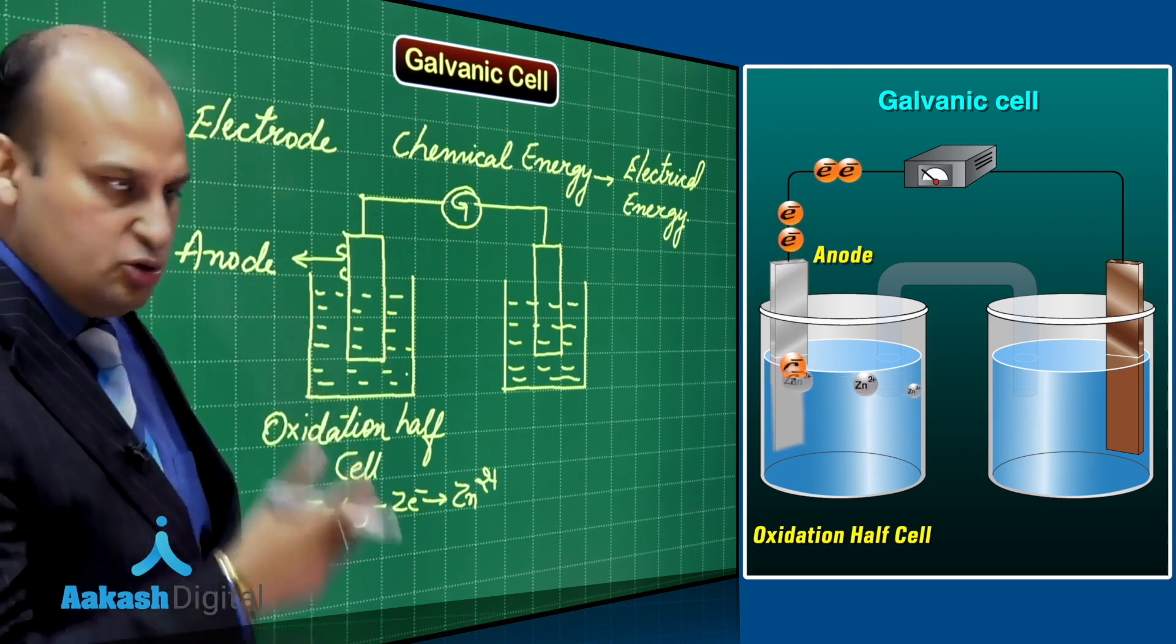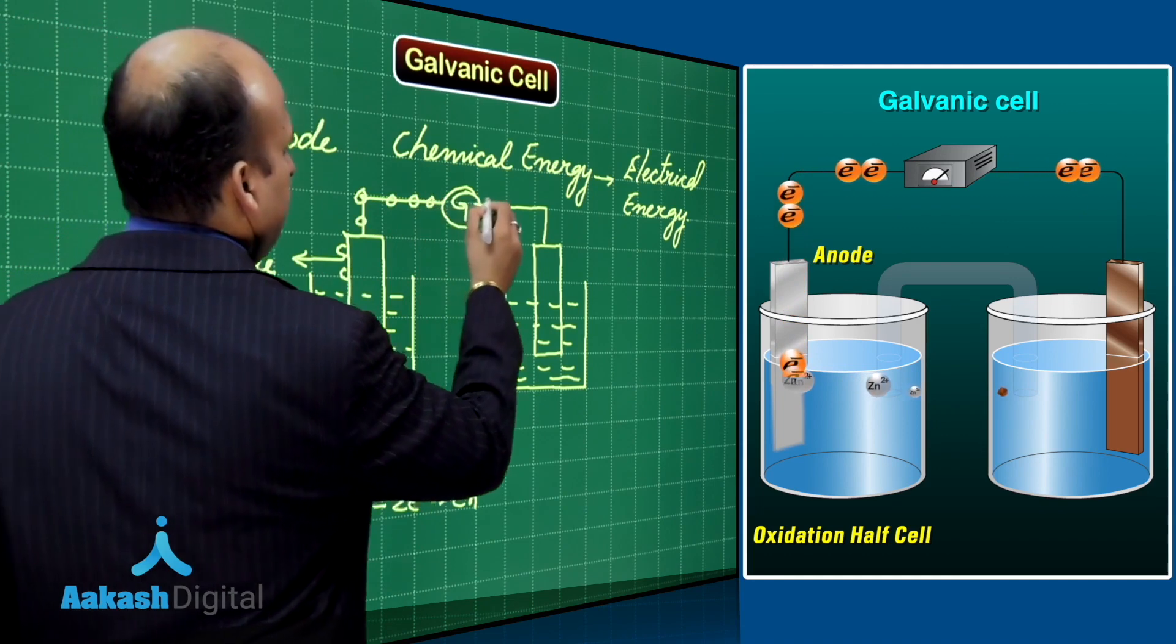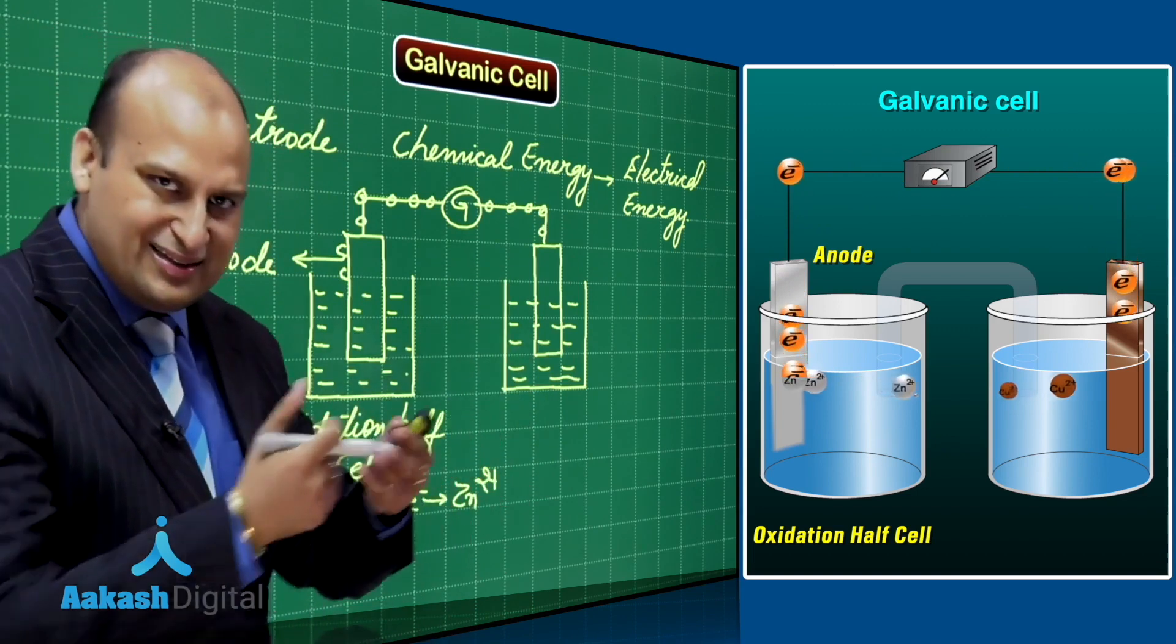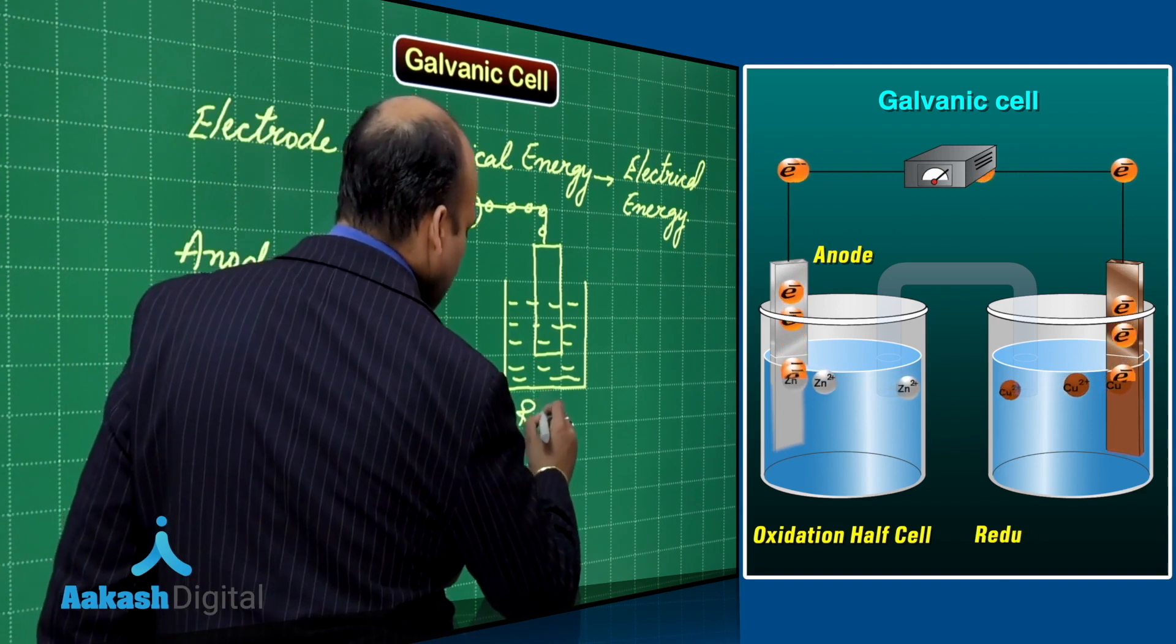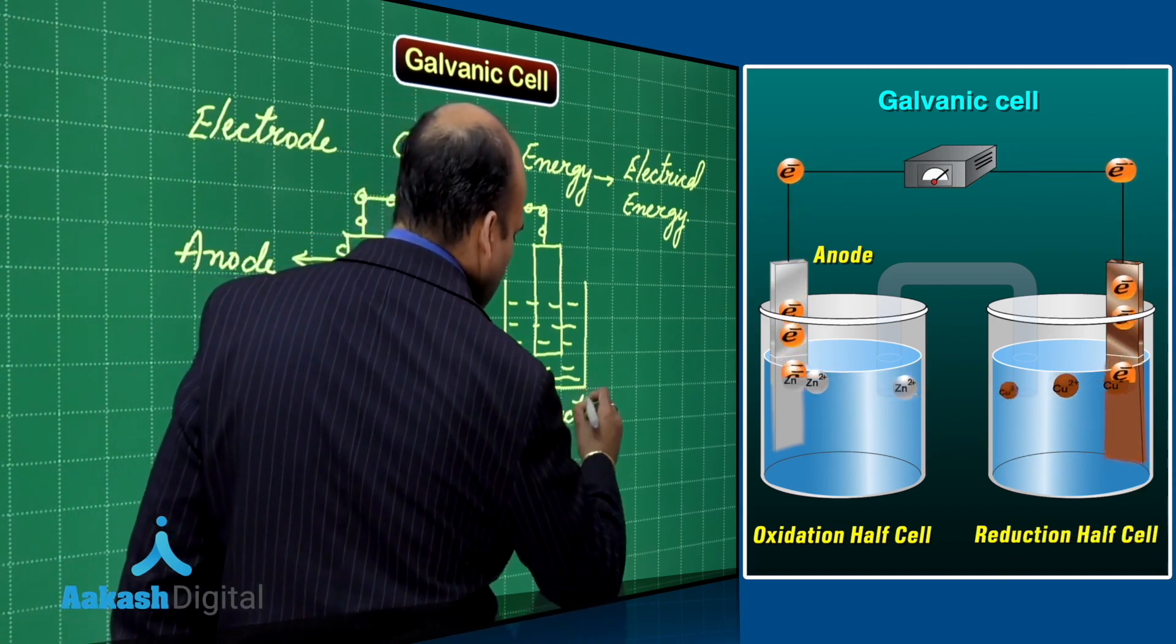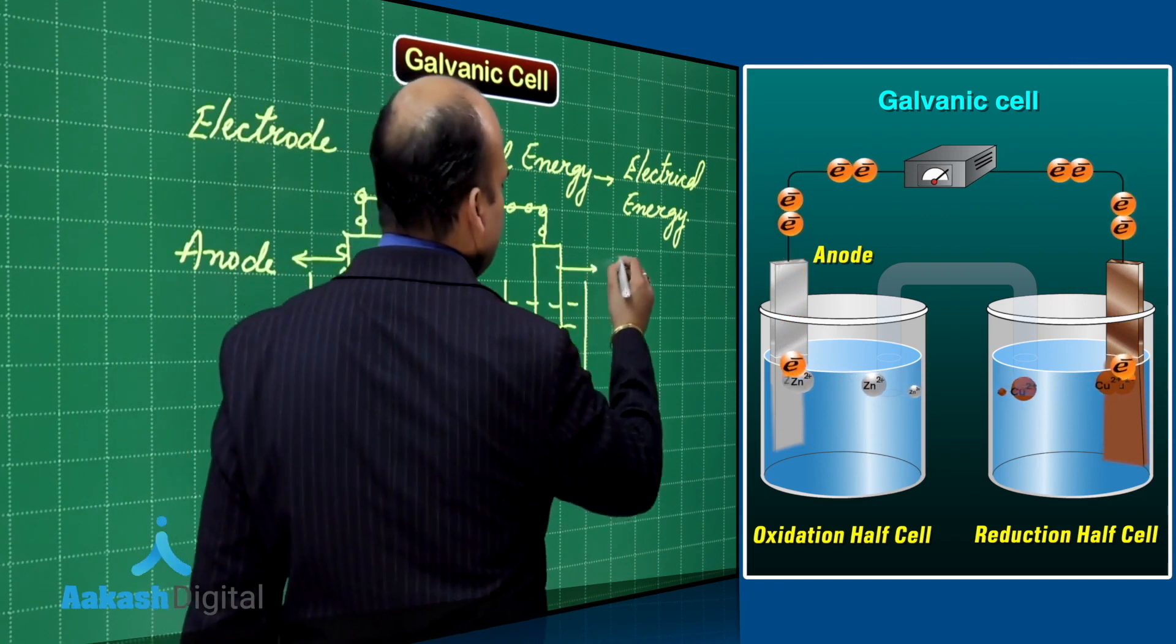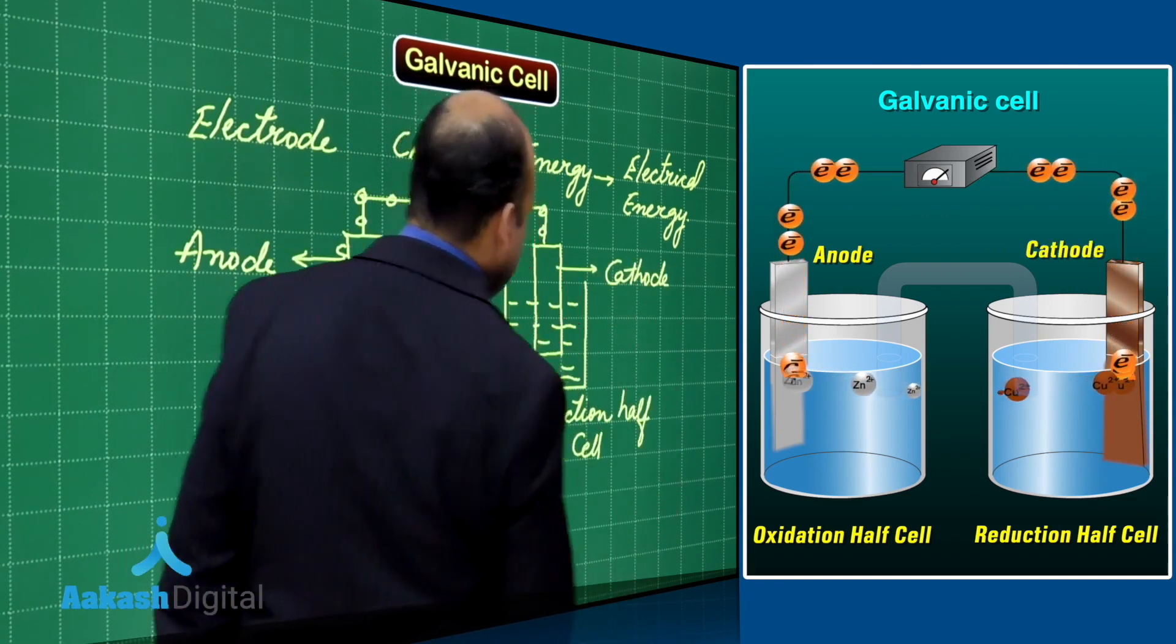Now, the reaction goes on, the electrons from here start moving towards the other end. So, they are moving towards this end. Now, if electrons are accepted over here, which chemical reaction are we talking about? We are talking about the reduction half cell and this rod is referred as cathode where the reduction is taking place.